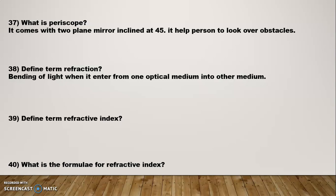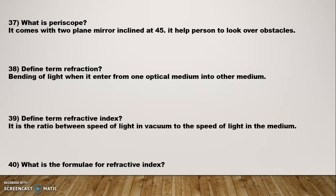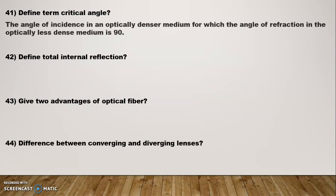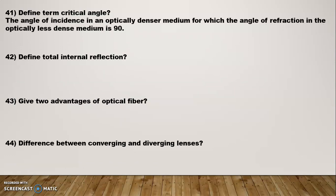Define refractive index: It is the ratio of the speed of light in a vacuum to the speed of light in the medium. Its formula is N = C/V, where C is the speed of light in a vacuum divided by the speed of light in the medium. Define critical angle: The angle of incidence in an optically denser medium for which the angle of refraction in the less dense medium is 90 degrees — that is the critical angle.